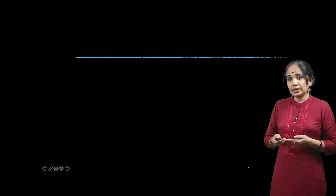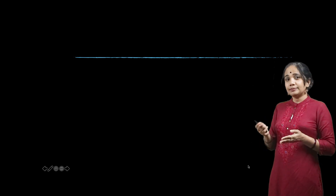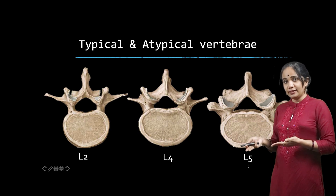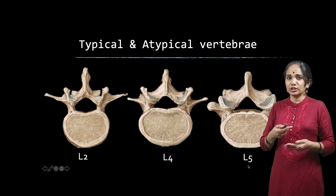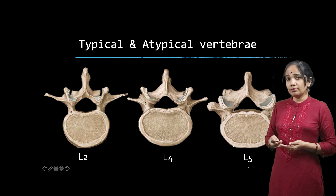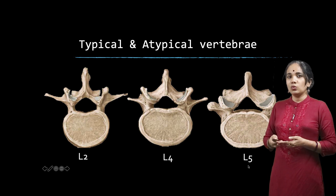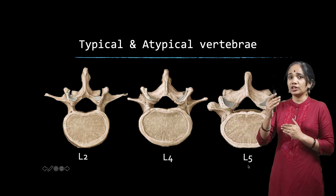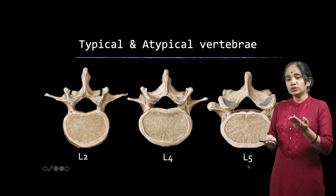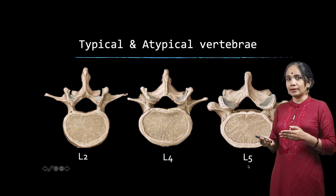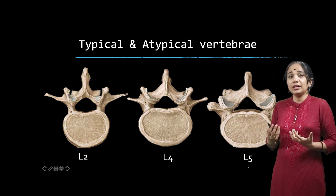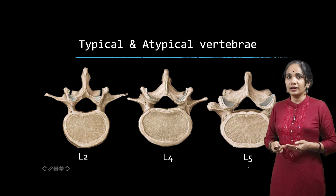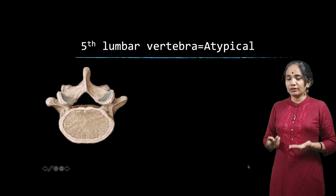The lumbar vertebrae can be classified into atypical and typical. L1, L2, L3, and L4 are together called typical vertebrae and share many features. The fifth lumbar vertebra, L5, is called atypical. Wherever there is a transition between one type of vertebra and another, we get atypical vertebrae. L5 lies close to the sacrum and begins to gain features similar to the sacrum — it broadens out, starting to look like the sacrum, which is why it is called atypical.